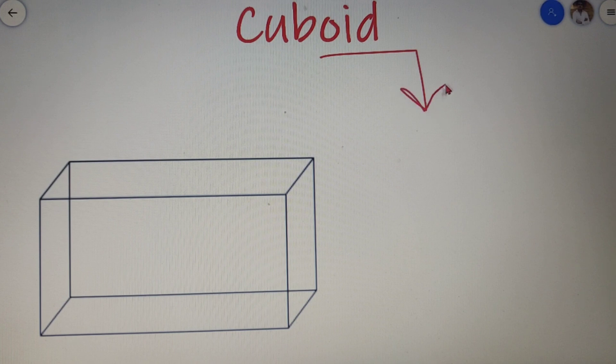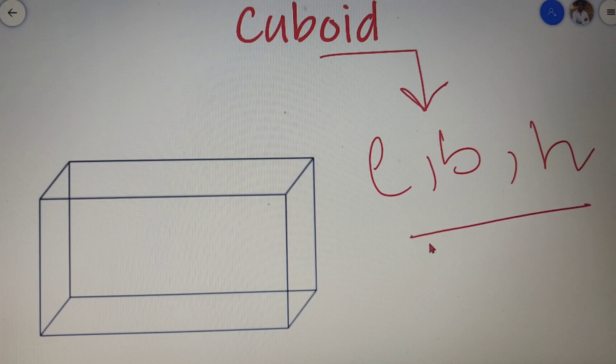A cuboid is a simple three-dimensional shape which has a length, a breadth and a height. Now for a cube we know that all the three dimensions L, B and H are equal, but for a cuboid only two of them can be equal but all three of them cannot be equal.